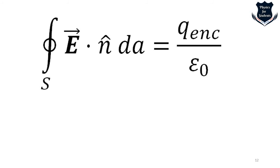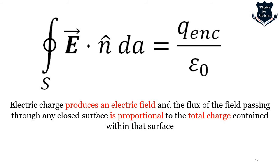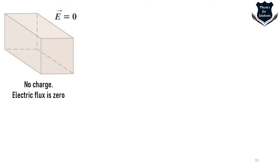Overall, Gauss's law for electric fields means: electric charge produces an electric field, and the flux of that field passing through any closed surface is proportional to the total charge contained within that surface. To express this concisely, we use the equation rather than always stating it in words.